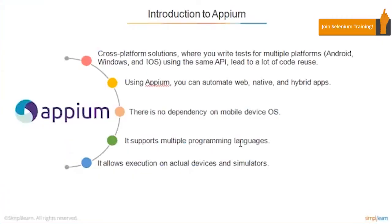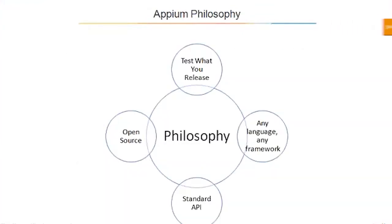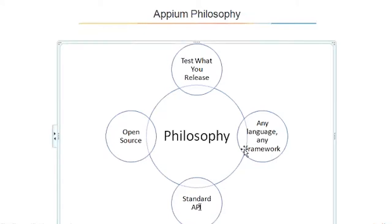Appium is a cross-platform solution where you write tests for multiple platforms — Android, Windows, and iOS. There is no dependency on the mobile device OS, it supports multiple languages, and it allows execution on actual devices and simulators. The Appium philosophy is: test what you release, any language, any framework, standard API, and open source.